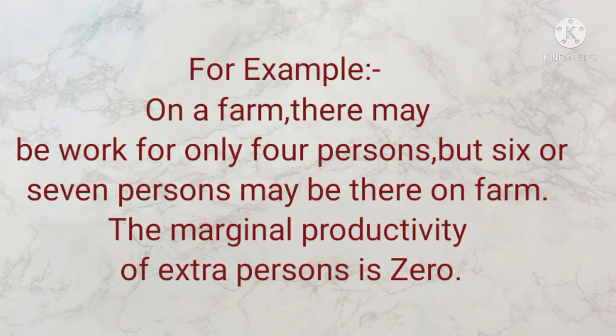For example, ek khet hai koi, toh us khet mein there may be work for only four persons. Toh woh us khet mein sirf 4 log kaam kar sakti hai, 4 person hi us khet ki production kar rahe hain. But six or seven persons may be there on the farm. Joh marginal productivity hogi us khet ki, wo us area ki extra persons ki almost zero hai. Toh jo extra productivity niklegi, woh zero niklegi. Toh is liye isko hum disguised unemployment kahte hain - yani ki woh vyakti kaam toh kar rahe hain, lekin unki jo output hai, woh zero hai.